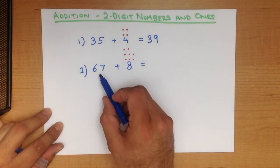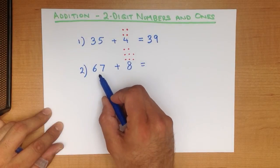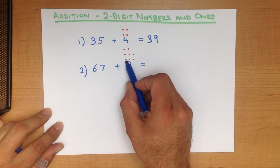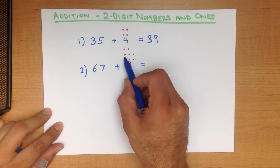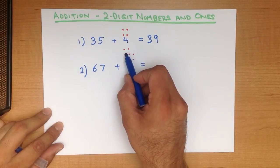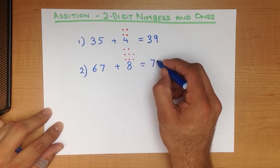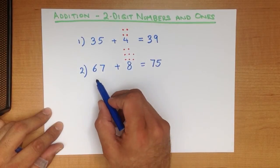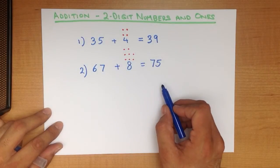So let's count from 67 going forwards. 67, 68, 69, 70, 71, 72, 73, 74, 75. And that is our answer. 67 plus 8 equals 75.